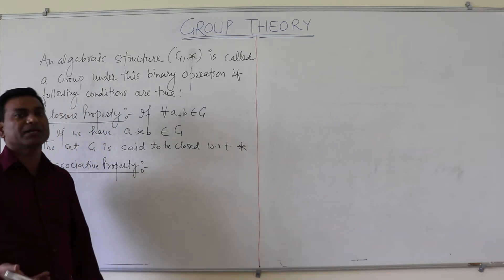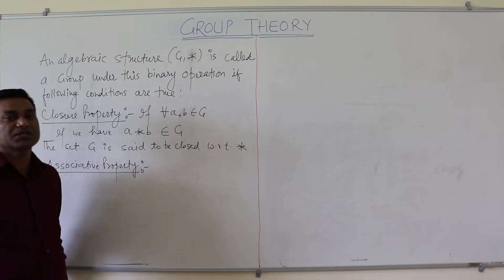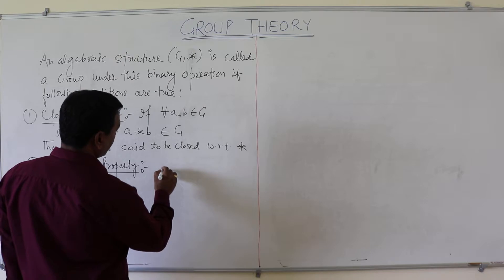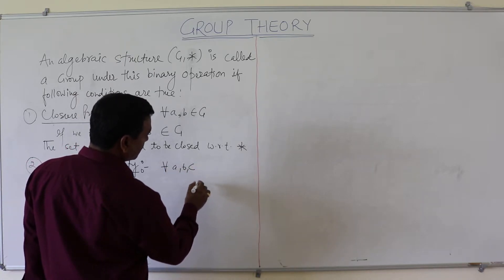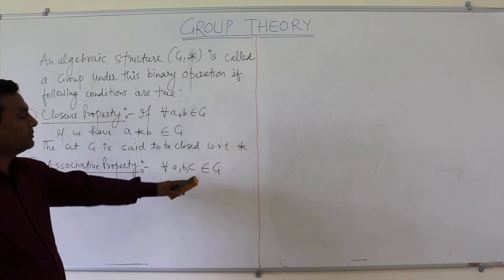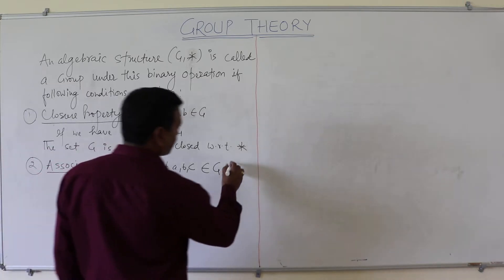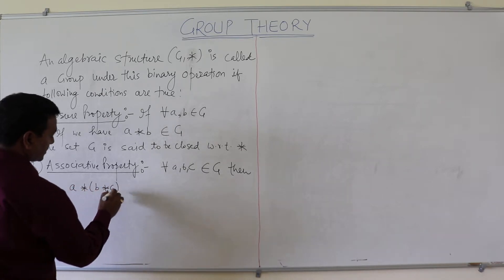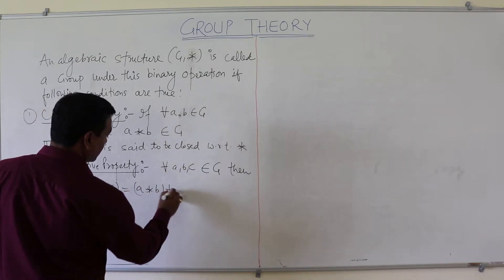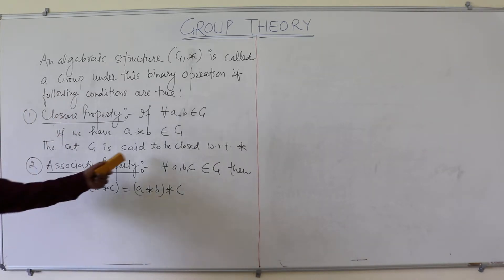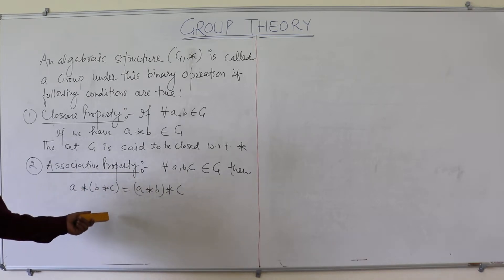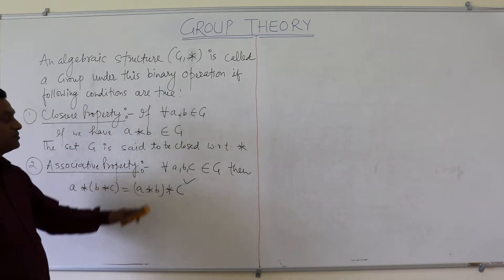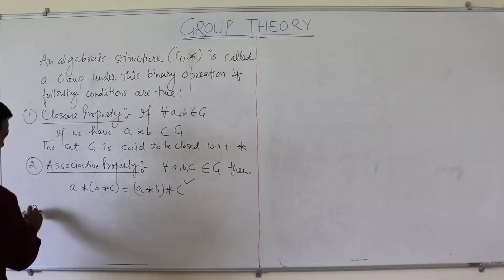The second property is the associative property. We are familiar with the associative law. For all a, b, c belonging to G, we have (a · b) · c equals a · (b · c). This property should hold. If it exists, then we can say that the associative property holds.